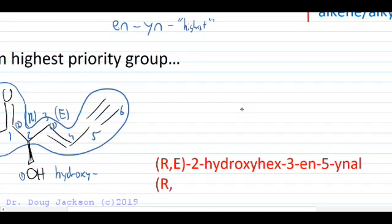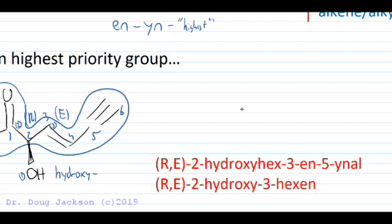We could also have written this with the first locant of the suffixes here out front: hex-3-en-5-in-al with a dash separating all letters and numbers.